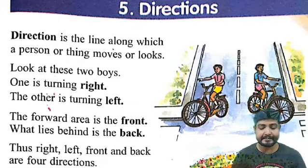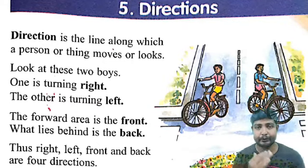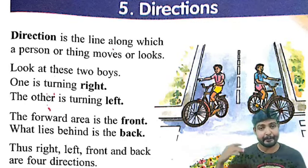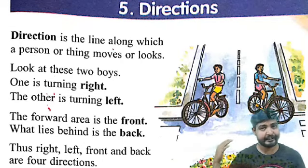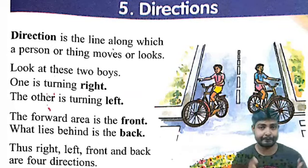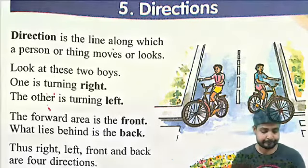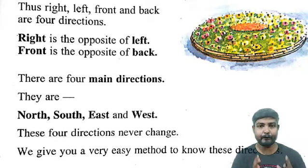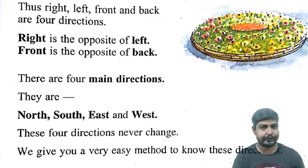The forward area is the front. What lies behind is the back. So right, left, front, and back are 4 directions. Mainly we have 4 directions: right, left, front, and back.